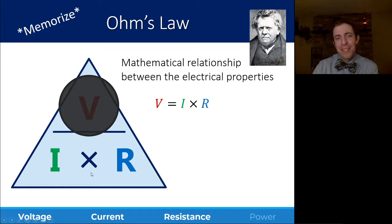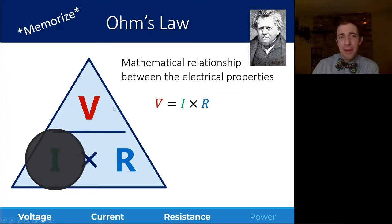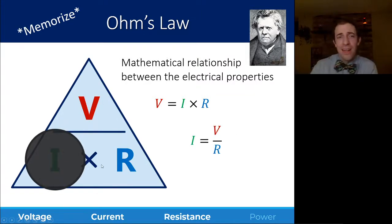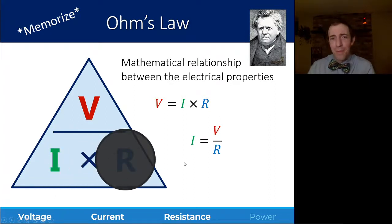This Ohm's Law triangle: voltage on top and current times resistance on the bottom. If you cover up voltage to solve for that, you end up with current times resistance. If instead, I cover up current, I end up with voltage divided by resistance. So, I is V over R, and then if I cover up R, resistance is voltage divided by current. Again, really all this is is just algebra, just a fancy way of finding that algebra.